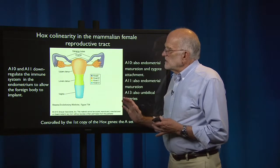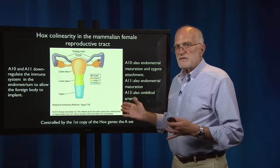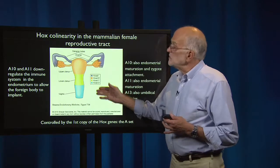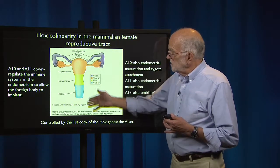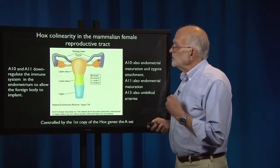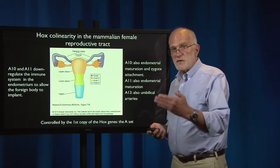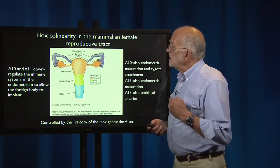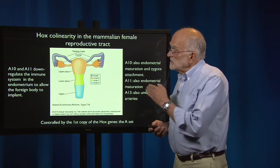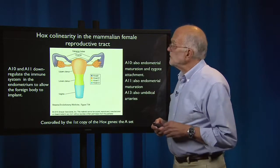The point is that a pre-existing set of developmental switches was co-opted and used to help in the evolution of a novelty — it was expressed in a new place. And this is all done through transcriptional factor control of gene expression.